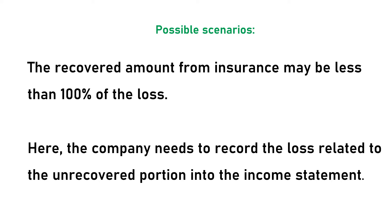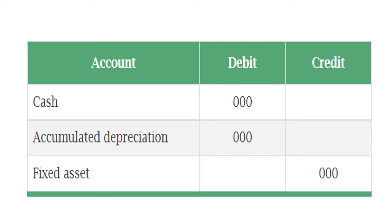To have received the insurance claim from the insurance company, the related accumulated depreciation also needs to be removed from the balance sheet. Hence, the company needs to debit the accumulated depreciation account as in the journal entry above.